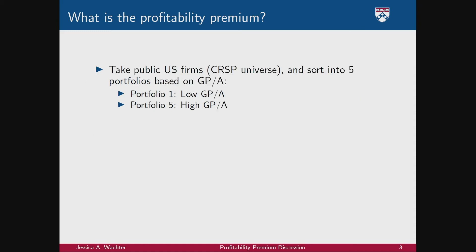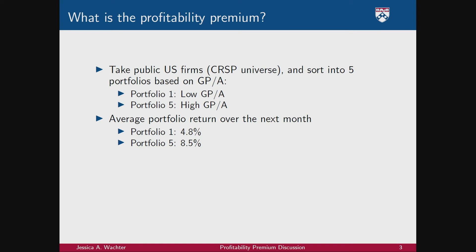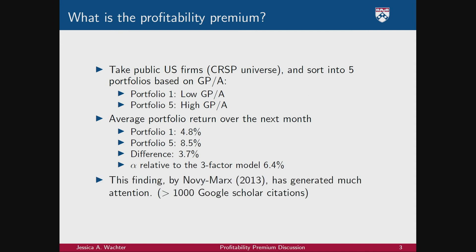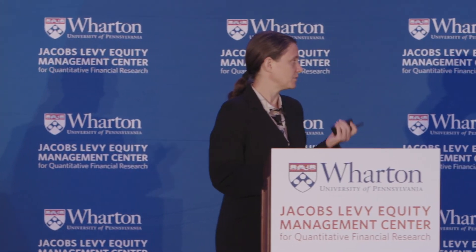You take all the publicly traded firms, sort them based on this measure, and form portfolios to reduce idiosyncratic risk and gain statistical power. Portfolio one is the lowest profitability firms; portfolio high is the highest. Then you look at their subsequent expected returns. The lowest firms have about a five percent return; the highest firms have about an eight and a half percent return — annualized — giving a difference of roughly four percent in raw returns. Relative to the Fama-French three factor model, it goes up considerably to six and a half percent. This finding was reported in 2013.